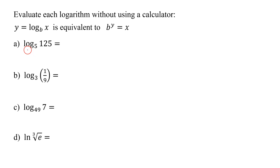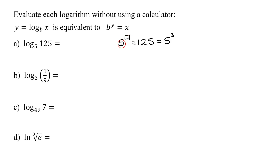Looking at our first example, we need log to the base 5 of 125. We have to ask ourselves: the base 5 raised to what number is going to give us 125? 125 is a power of 5 — it is 5 cubed, because 5 times 5 is 25, times 5 is 125. So what power do I have to raise 5 to in order to get 125? The answer is 3.